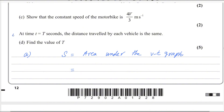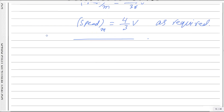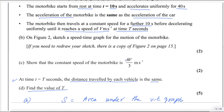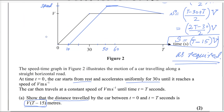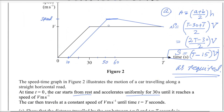Now let's solve the last part. At time t equals T seconds, the distance travelled by each vehicle is the same — find the value of T. The distance of the car equals the distance travelled by the motorbike, as given. The distance travelled by the car is already proved: it equals v(T minus 15). Now we need to find the distance travelled by the motorbike. We can split the motorbike's diagram into three parts: a triangle, a rectangle, and a trapezium.